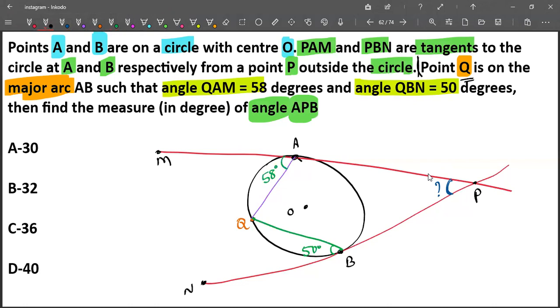We know the radius is perpendicular to the tangent, so this angle is 90 degrees. This entire angle is 90 degrees, and this particular angle is 58 degrees.